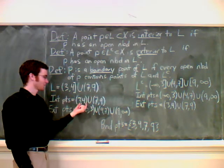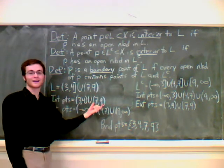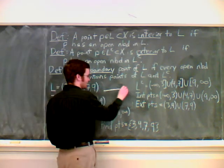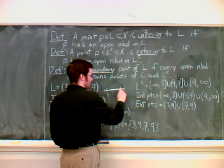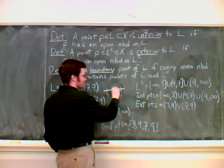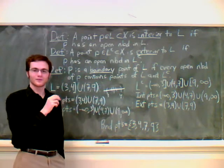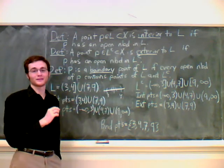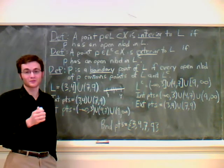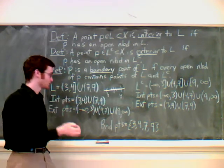The interior points are from 3 to 4 and 7 to 9 exclusive. You can see this because if we take a point inside, there's always some small area around it that's completely within our set. It may be very small depending on how close it is to the boundary, but there is always one.